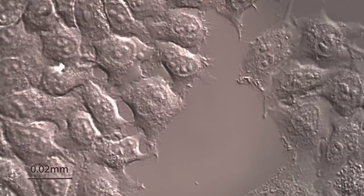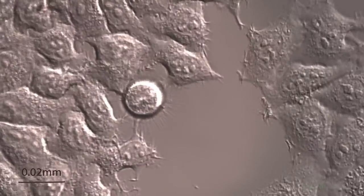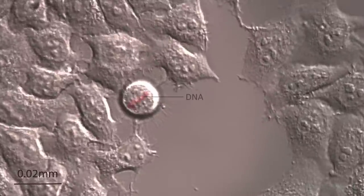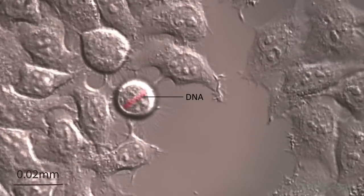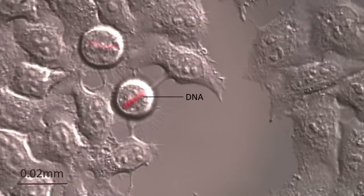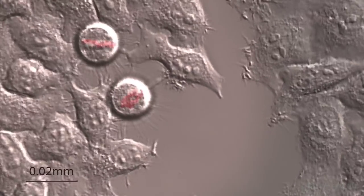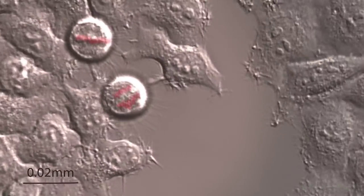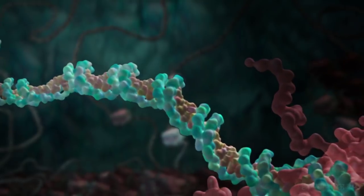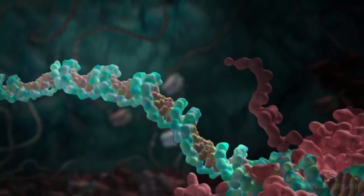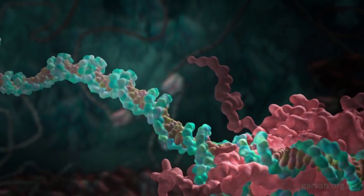Different cells use the information contained within the DNA in different ways. Some parts of the DNA in one cell will be active, but not in another. This genetic information is encoded within the letters or bases of our DNA sequence.